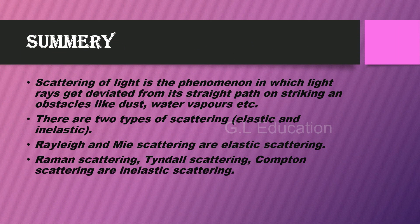In summary, scattering of light is the phenomenon in which light rays get deviated from their straight path on striking obstacles like dust or water vapors. There are two types of scattering: elastic and inelastic scattering. Rayleigh and Mie scattering are elastic scattering, while Raman scattering, Tyndall scattering, and Compton scattering are inelastic scattering.